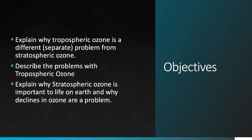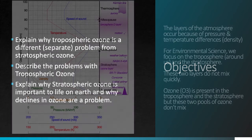The most important point to get out of this video is that tropospheric ozone is a completely separate problem from what we see with stratospheric ozone. After watching this video, you should be able to describe the problems that occur with tropospheric ozone, and also explain why stratospheric ozone is important to life on Earth and why declines in ozone at the upper levels of the atmosphere are an important problem.